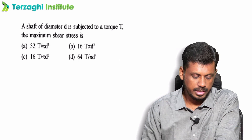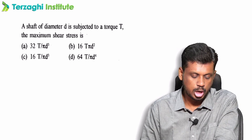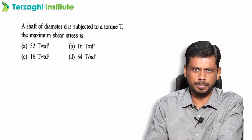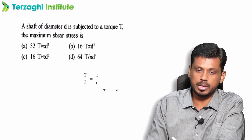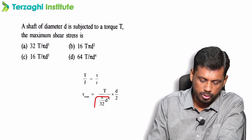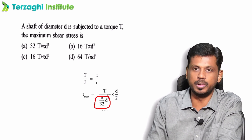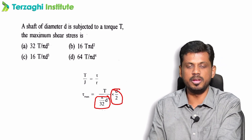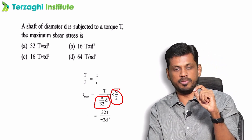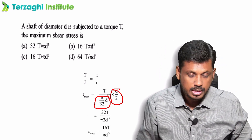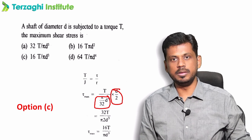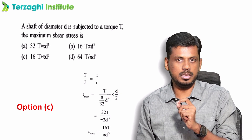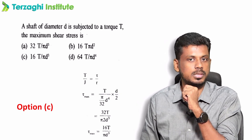A shaft of diameter D is subjected to a torque T. The maximum shear stress: T by J equals tau by R. J equals pi D to the power 4 by 32, R equals D by 2. Substituting and simplifying: 16T divided by pi D cubed. This is important — 16T divided by pi D cubed.